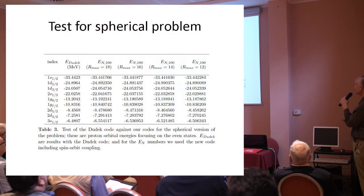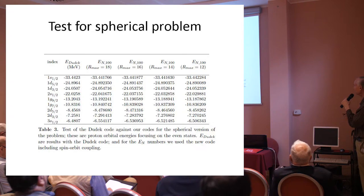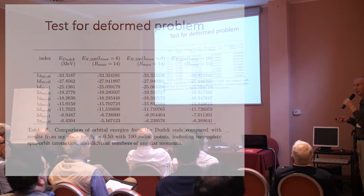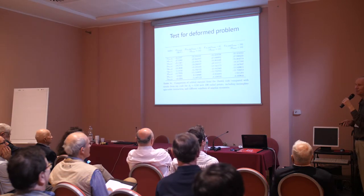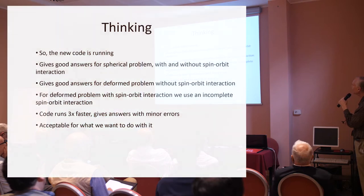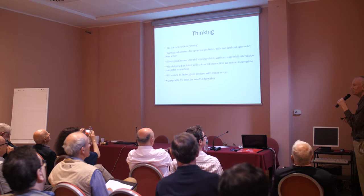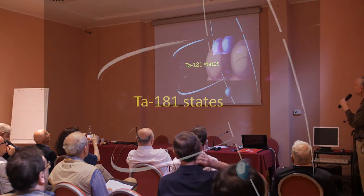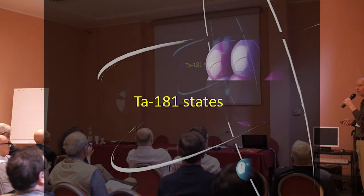For the spherical problem including spin-orbit I get really good answers. For the deformed problem the answers aren't quite as good — there's a little bit of difference — but the difference is small enough that I'm probably going to get an okay answer for the matrix element I care about. I'm basically happy with the calculation, not ecstatic, but it would be fun to have it be better. So now I've got a code that's running and I want to look at the states of Tantalum-181.